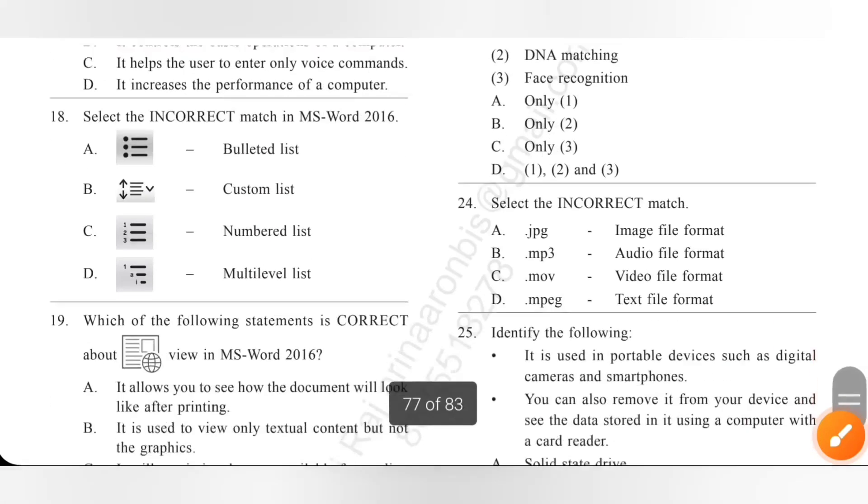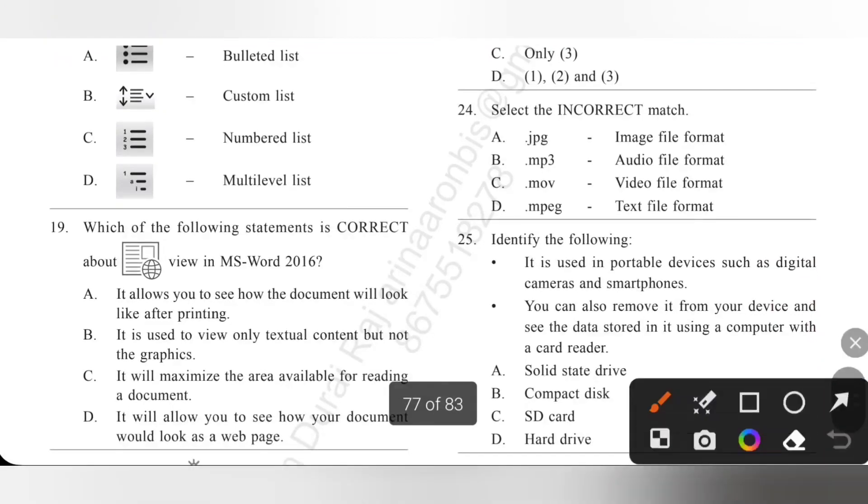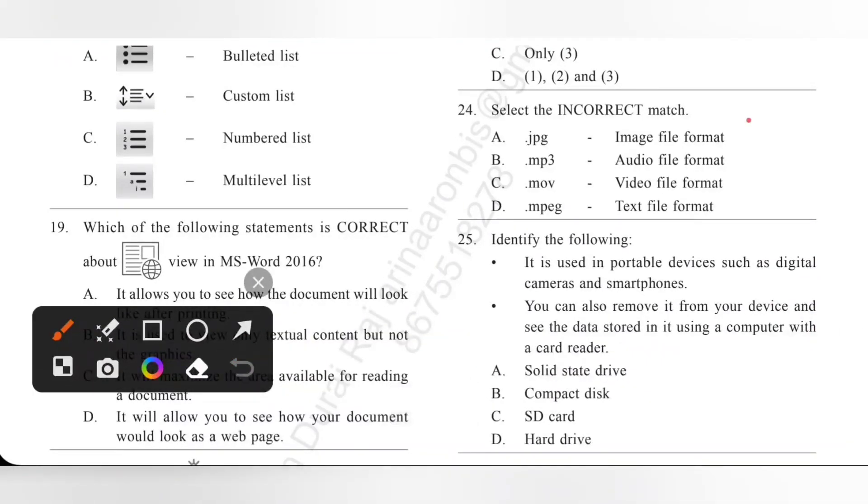Next 24, select the incorrect match. JPEG image file format, yes. Dot MP3 audio file format, yes. Dot MPEG text file format - it is incorrect. It is video file format. Option D is the incorrect one.